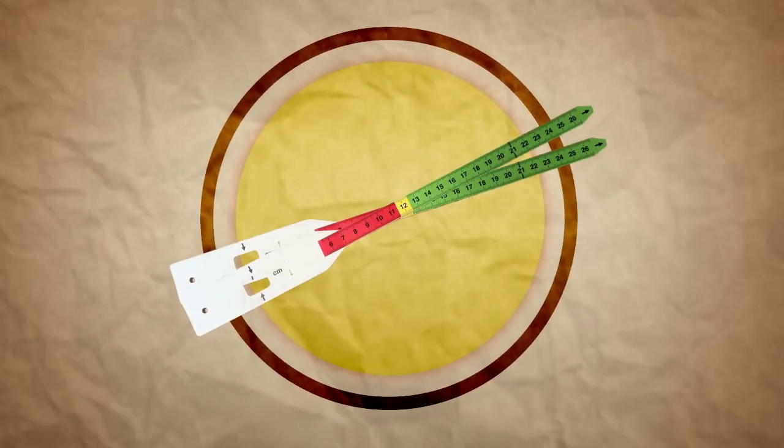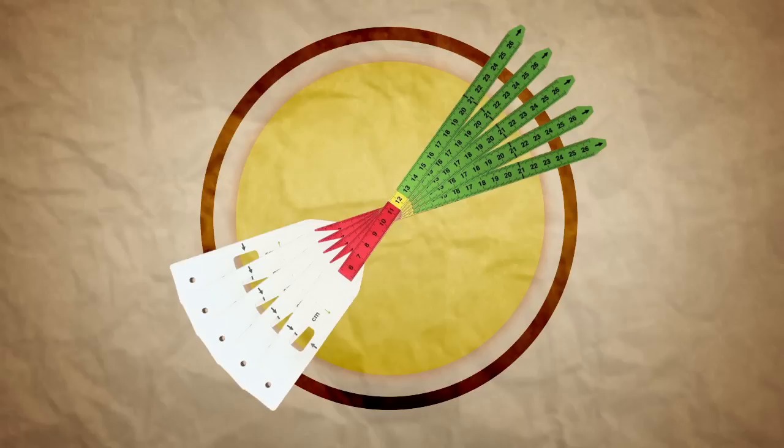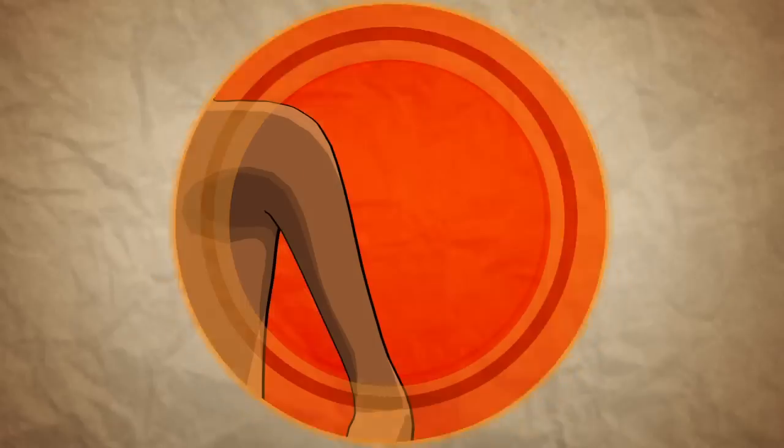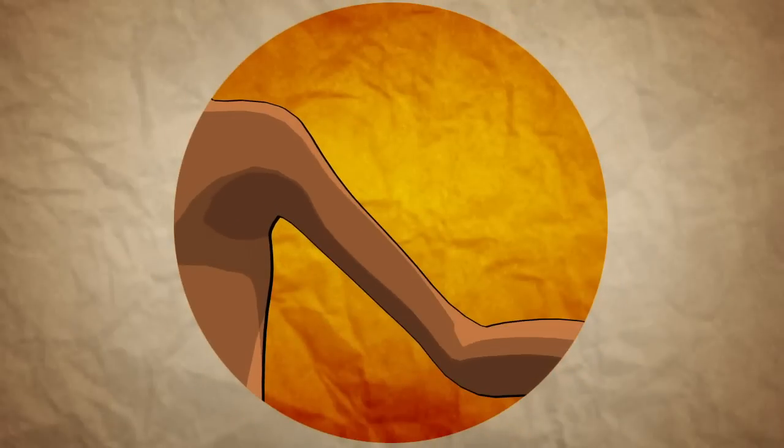For children aged six months and more, a more conclusive test is the mid-upper arm circumference measurement. For this, ask the mother or carer to uncover the child's arm. Estimate the midpoint of the left arm. Straighten the child's arm and wrap the tape around the midpoint. Make sure the numbers are right side up and the tape is flat around the skin.